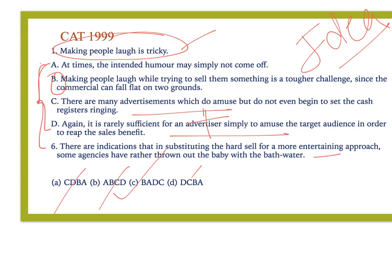Now the simple thing you need to understand here is that there is a linkage between B and A, but B-A cannot be the end. Your main idea is making people laugh — that's the reason you choose B first. Then you don't even have to look at any other option — you just mark C. 20 to 30 seconds, and you are done.